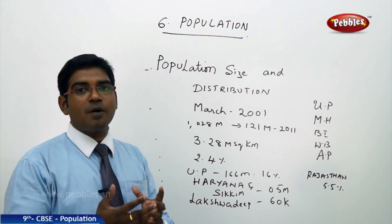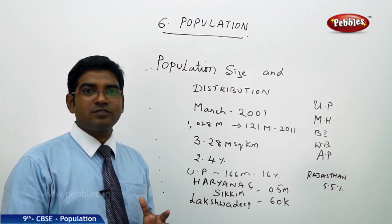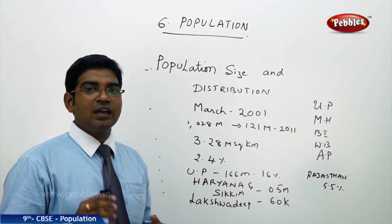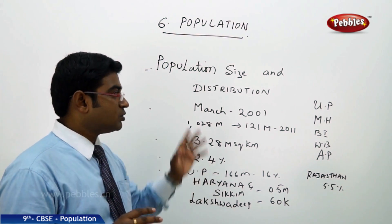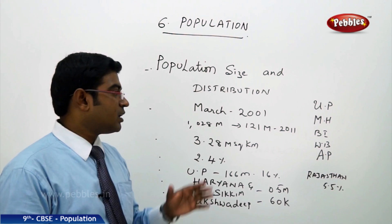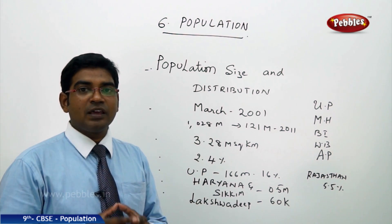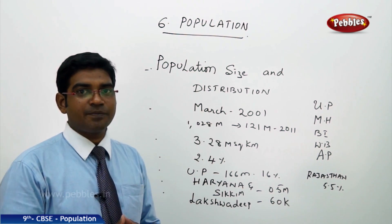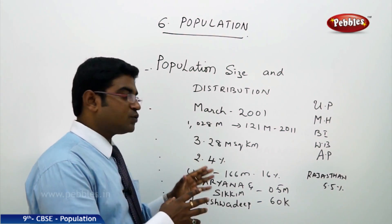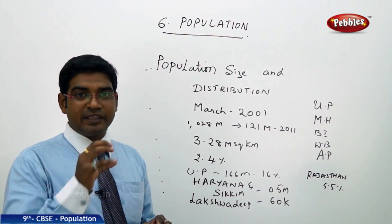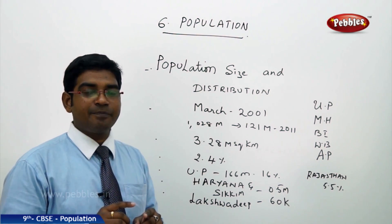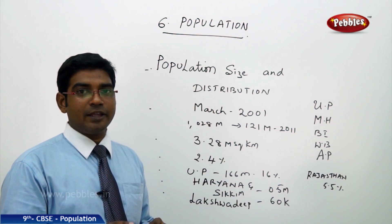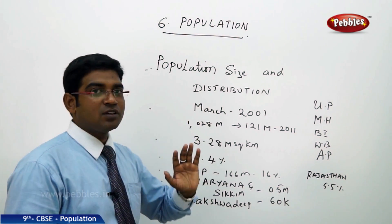Uttar Pradesh is the maximum populous state, while Sikkim and Haryana are the lowest populated states. Five major states in India comprise more than 50% of the entire population: Uttar Pradesh, Maharashtra, Bihar, West Bengal, and Andhra Pradesh. Rajasthan, though the largest state, has a population percentage not proportional to its area. India accounts for 2.4% of the world's total area, yet is the second most populous country in the world.